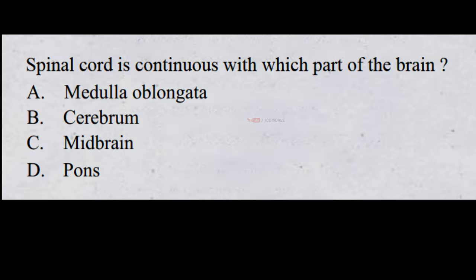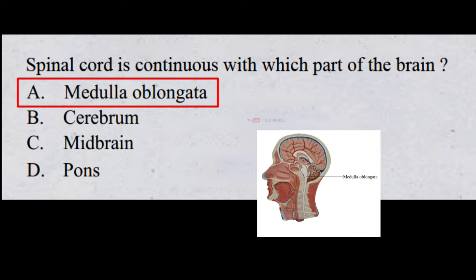Spinal cord is continuous with which part of the brain? A. medulla oblongata, B. cerebrum, C. midbrain, D. pons. The correct answer is A, medulla oblongata. The spinal cord is continuous with the medulla oblongata at the foramen magnum.